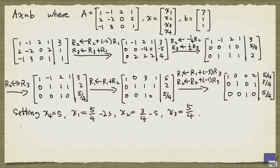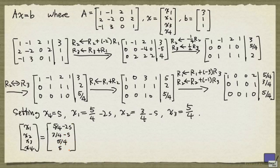So we can write this as the tuple x1, x2, x3, x4 equals 5 quarters minus 2s, 3 quarters minus s, 5 quarters, s. And this is a solution for every real number s.